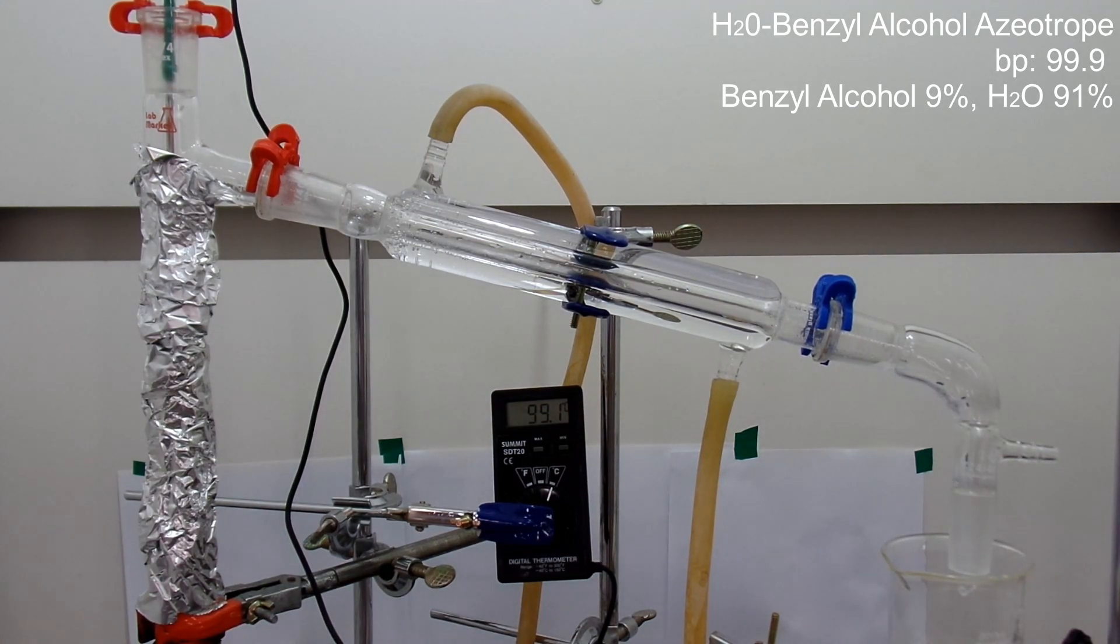Benzyl alcohol would be about 10 milliliters maximum, but we have excess water. So all we got after the fractional distillation was water-benzyl alcohol azeotrope that contains a little bit of benzyl alcohol.